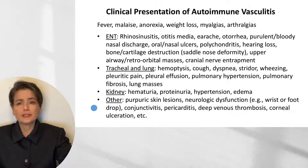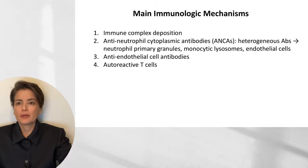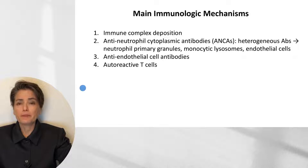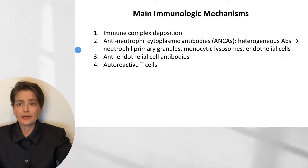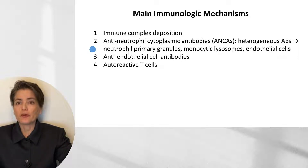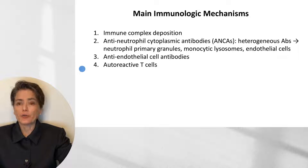In order to understand the process of autoimmune vasculitis, it's important to recognize the pathogenesis. There are four main immunologic mechanisms. One is immune complex deposition, or type 3 hypersensitivity. We can also see the deposition of antineutrophil cytoplasmic antibodies, or ANCAs — a heterogeneous group of antibodies to neutrophil primary granules, monocytic lysosomes, and endothelial cells. We can also see anti-endothelial cell antibodies and autoreactive T-cells.